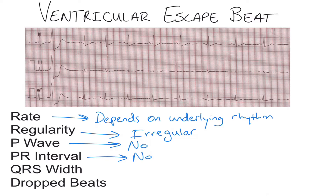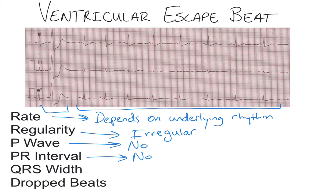You'll notice that in this strip there are P waves and PR intervals — that's because the underlying rhythm contains them, but it also contains ventricular escape beats. So while this rhythm might look normal from here to here, we actually have an arrhythmia with the ventricular escape beats. The QRS width on a ventricular escape beat is going to be wide and bizarre looking.